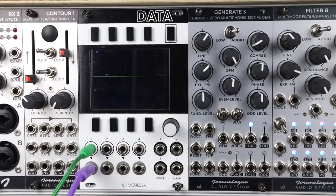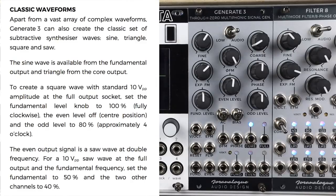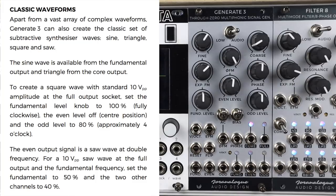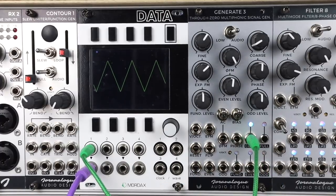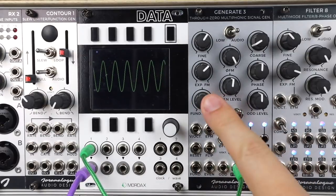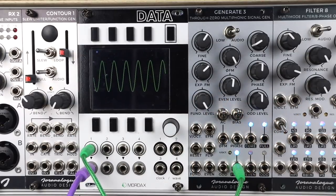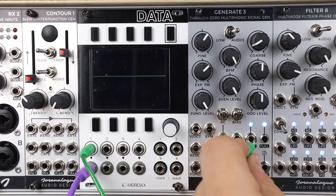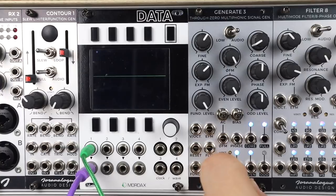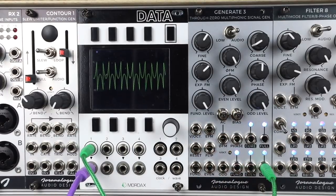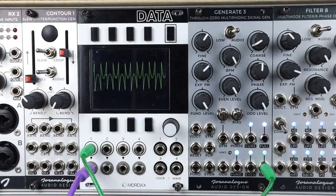Now we'll start by listening to and looking at the waveforms we get on Generate Free. We don't get the standard saw, pulse, triangle, and sine you may expect from an analogue oscillator. As we've already described, we get the core output, full, fundamental, even, and odd. Starting with the core, that is the core triangle wave of this oscillator - it's an octave lower than the sine wave at the fundamental. An octave above that is a saw wave on the even output. So we jump up: triangle, octave up sine, octave up saw, and then even harmonics, which is a sort of unique folded-looking shape.